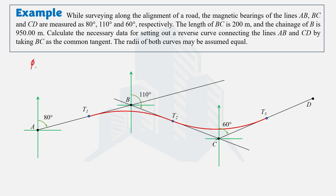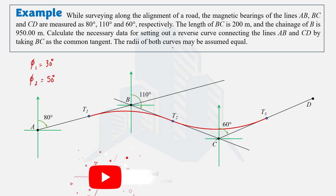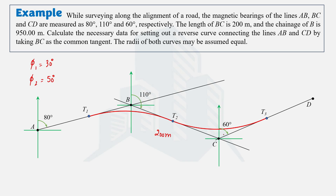We now have deflection angles of 30 degrees for the first curve and 50 degrees for the second curve. Since the radius is not given, we use the fact that BC is the common tangent of 200 meters. The length of the common tangent equals the tangent length of the first curve plus the tangent length of the second curve, so BC = T1 length + T2 length = 200 meters.